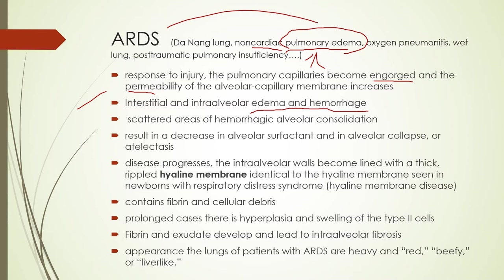We'll order an EKG and echocardiogram to look at heart function and try to rule out cardiac causes. On the echo we can also look at vascular volume — we can see the compressibility of the vena cava to see if they're dry or hypervolemic. It's going to look a lot like pulmonary edema because that is an aspect of ARDS.